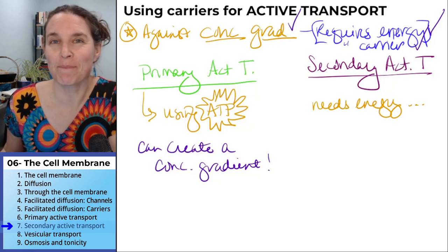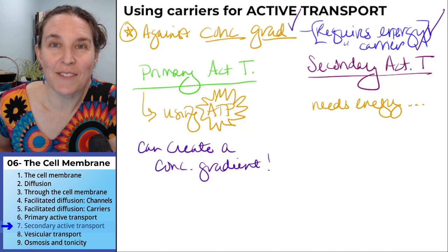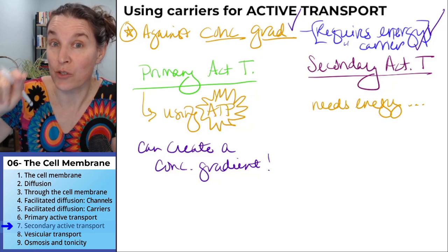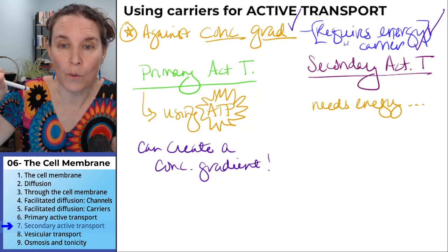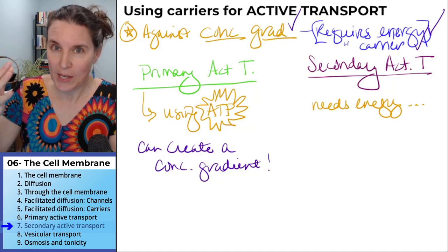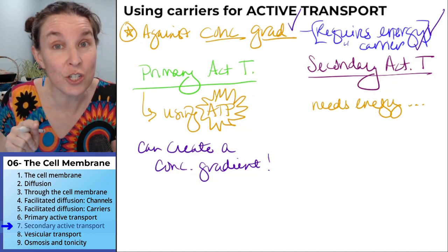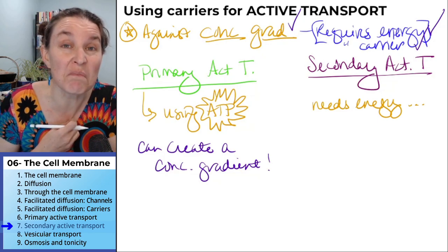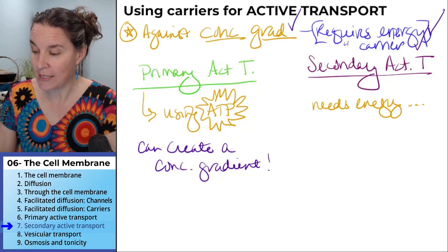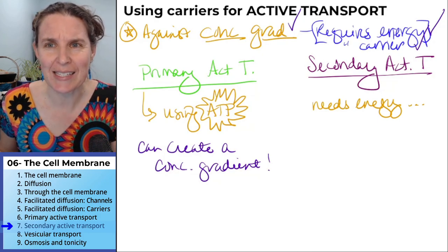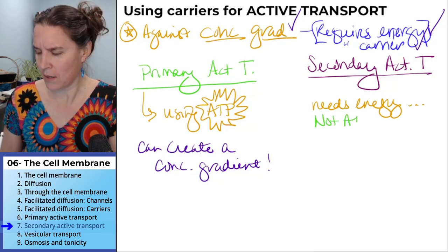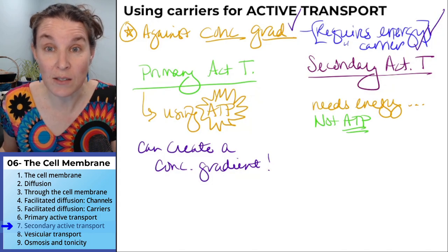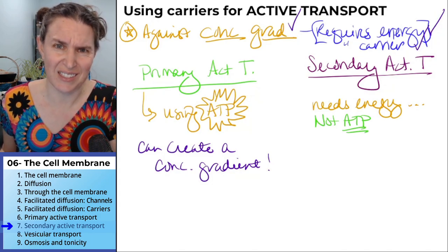True or false? What are you going to say? I just posed a question to you that you don't know the answer to. You don't know what the energy source is. You know we need energy, but you don't know what the energy source is. And I just said, is it ATP? If you had to guess right now, you should say no, it's not ATP. That would be a good guess. Because if it was ATP, how is it different from primary active transport? That's the logic.